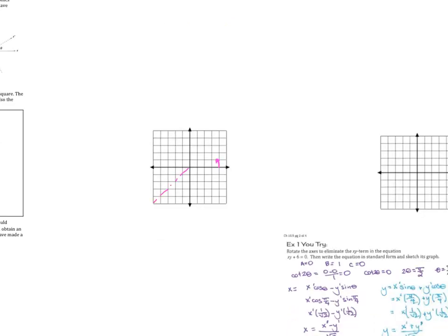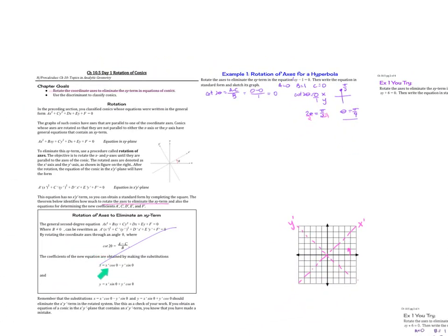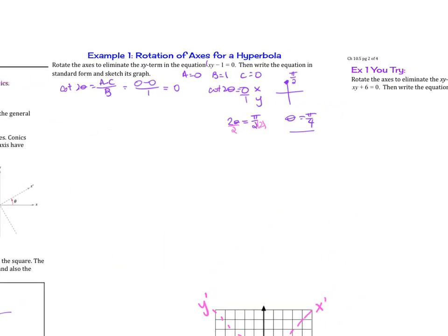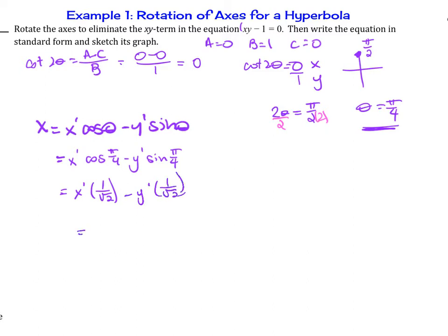Now we'll use the substitution equations for x and y. For x: x = x′cos(π/4) − y′sin(π/4). Since cos(π/4) = sin(π/4) = 1/√2, this becomes x = x′(1/√2) − y′(1/√2), which simplifies to x = (x′ − y′)/√2.